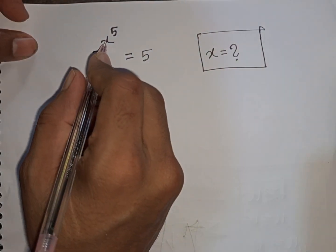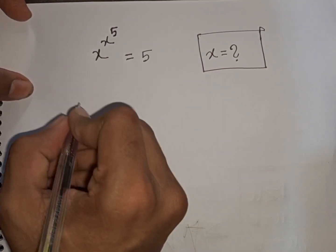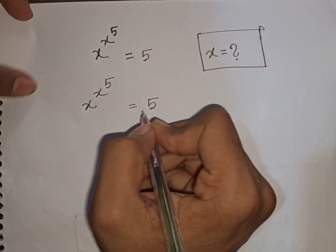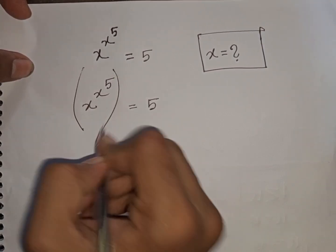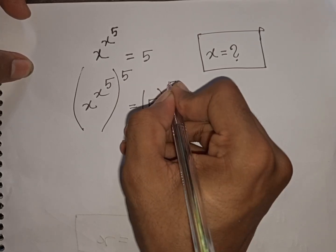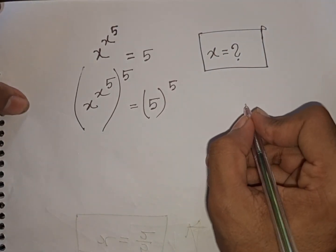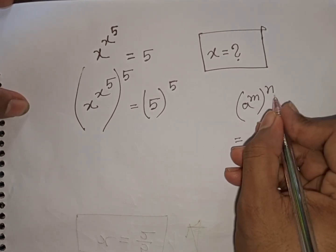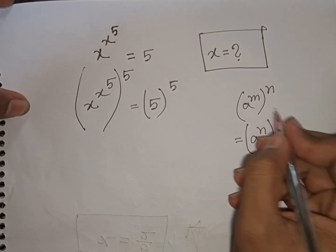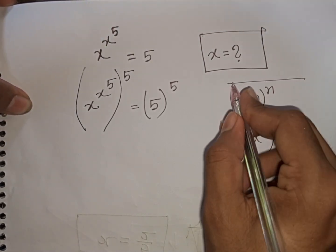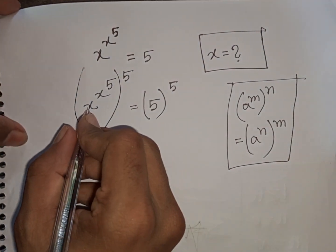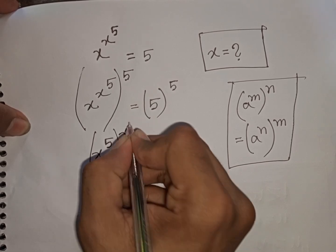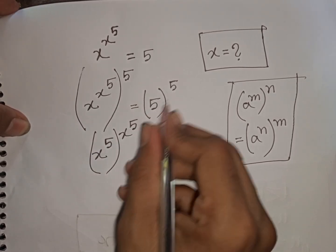How to solve x^(x^5) = 5. Find the value of x. We raise both sides to the power of 5. Applying the exponential rule (a^m)^n = (a^n)^m, we get (x^5)^(x^5) = 5^5.